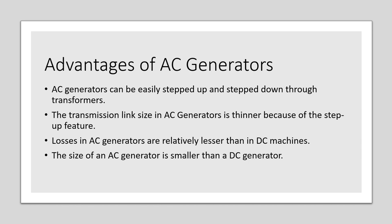Some advantages of AC generators over DC generators: AC generators can be easily stepped up and stepped down through transformers. The transmission link size in AC generators is thinner because of the step-up feature. Losses in AC generators are relatively lesser than in DC machines, and the size of an AC generator is smaller than a DC generator.